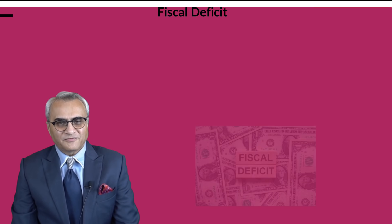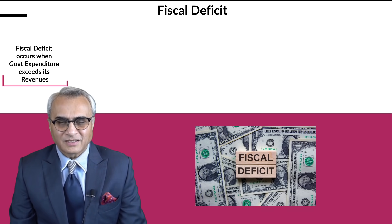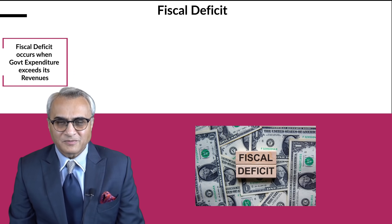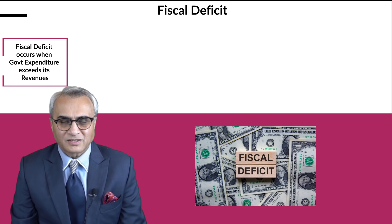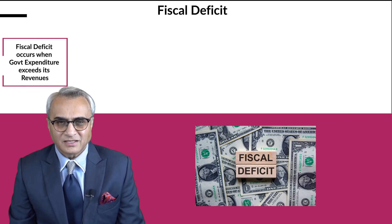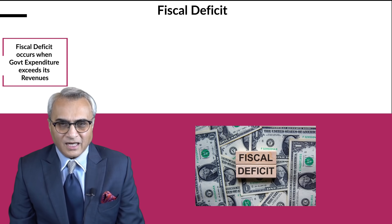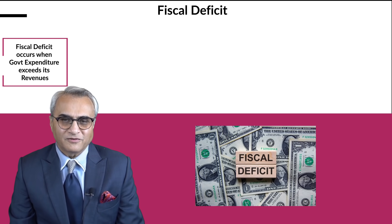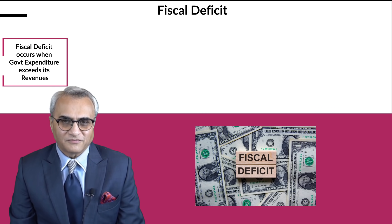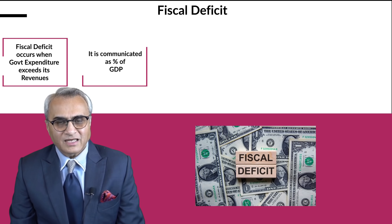What is fiscal deficit? Fiscal deficit is the difference between the government's revenue and the government's expenditure. Generally, expenditures are on the higher side than revenue, and that's why we call it fiscal deficit. It is communicated as a percentage of Gross Domestic Product, or GDP.